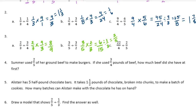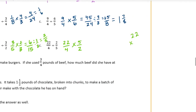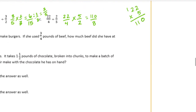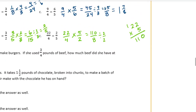And then the last one: 22 fourths divided by 2 fifths. So it's going to be 22 fourths times 5 halves. 22 times 5 — let's do 22 times 5 — is 110, carry the 1. It would be 110 eighths. I can divide them both by 2 because they're both even numbers. So 110 divided by 2 would be 55, and 8 divided by 2 is 4. So 55 fourths.